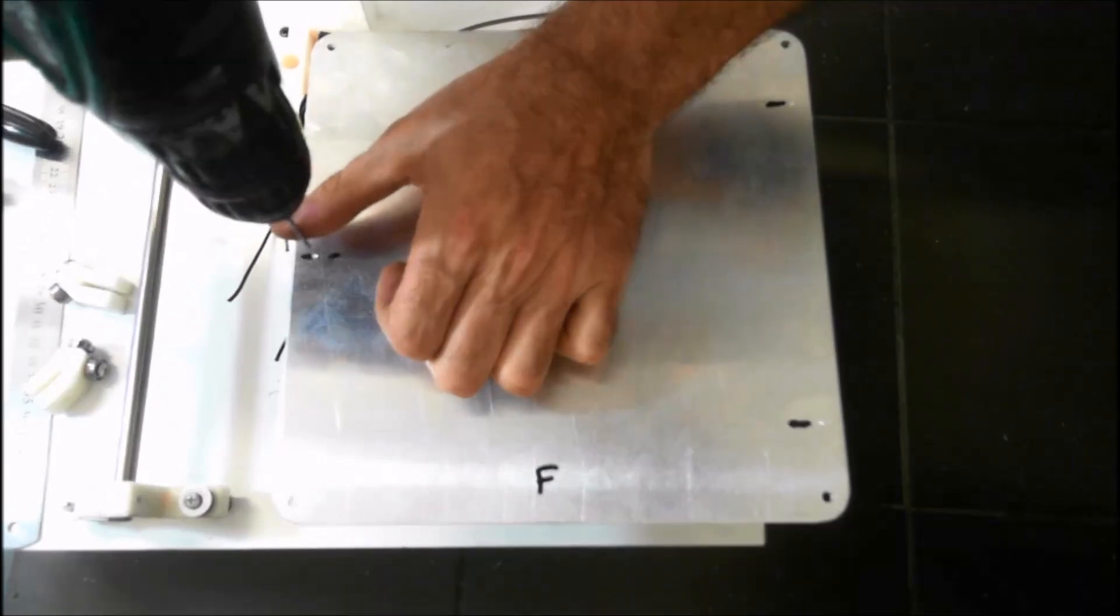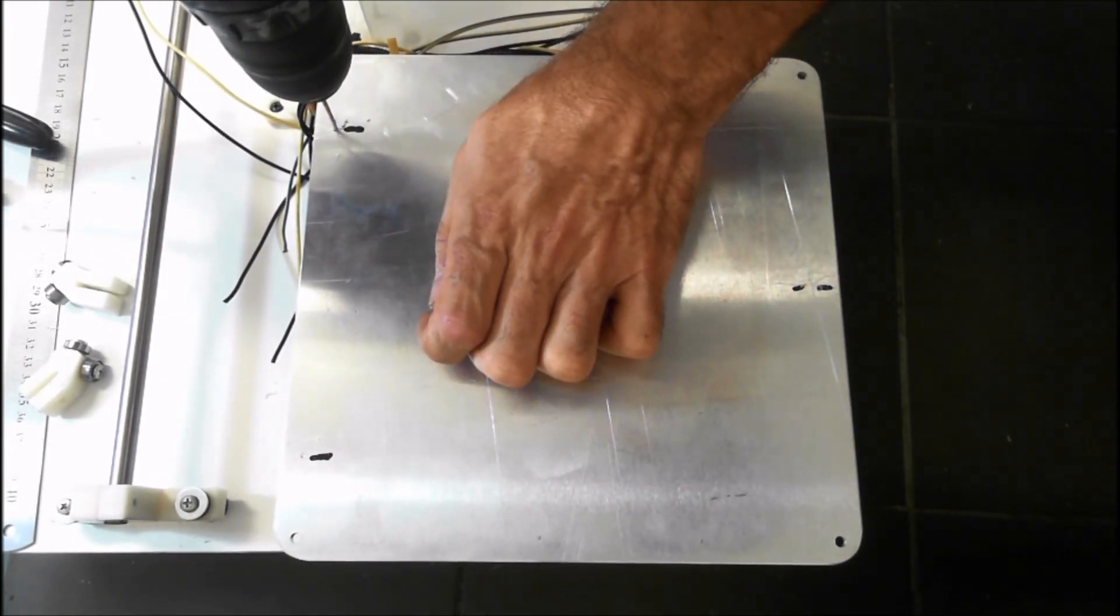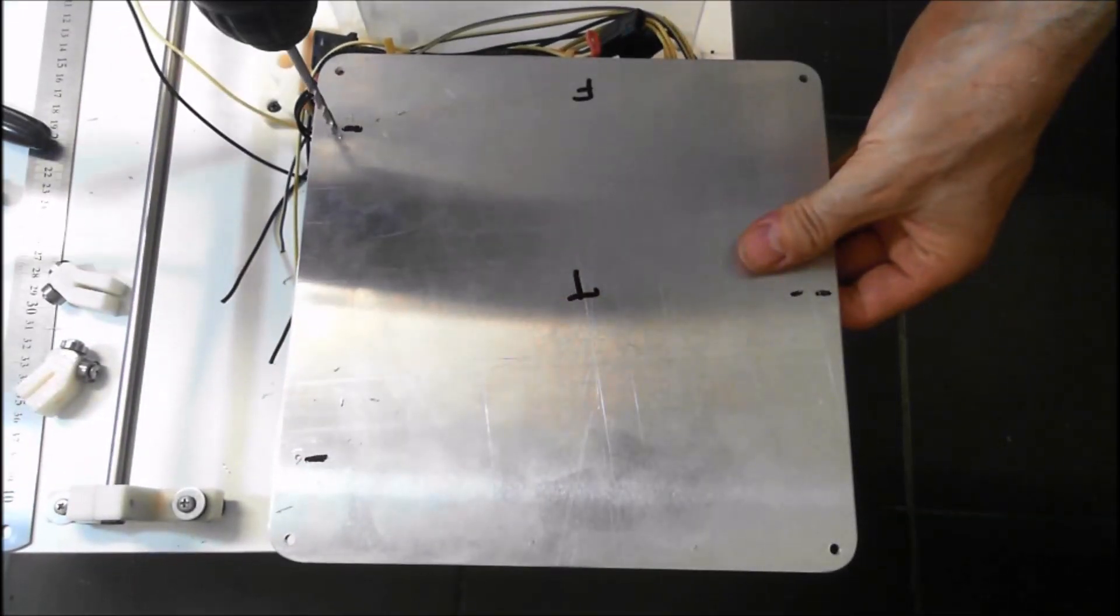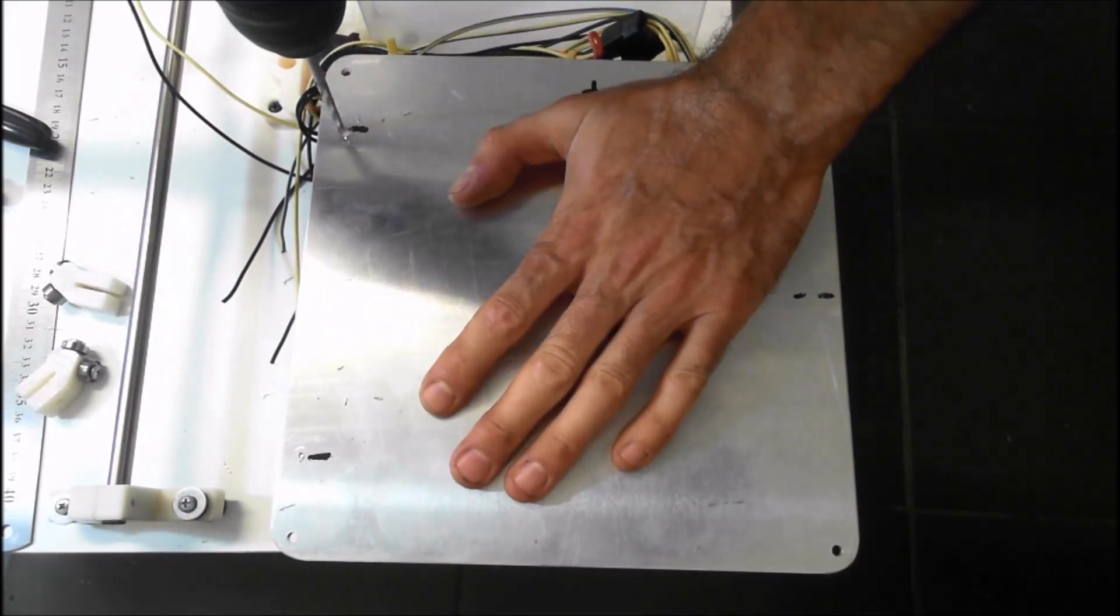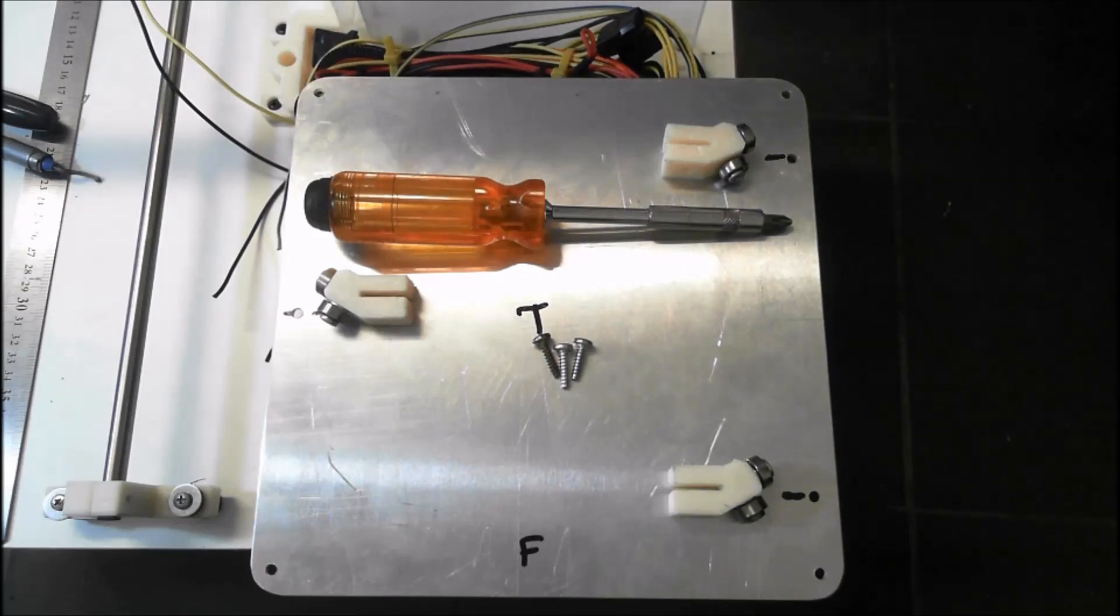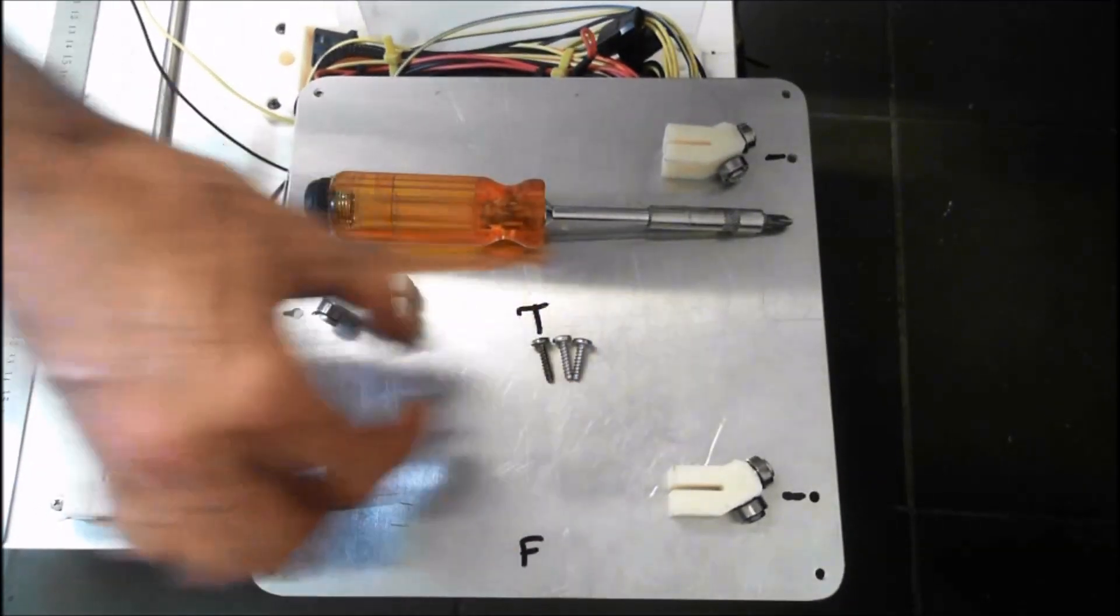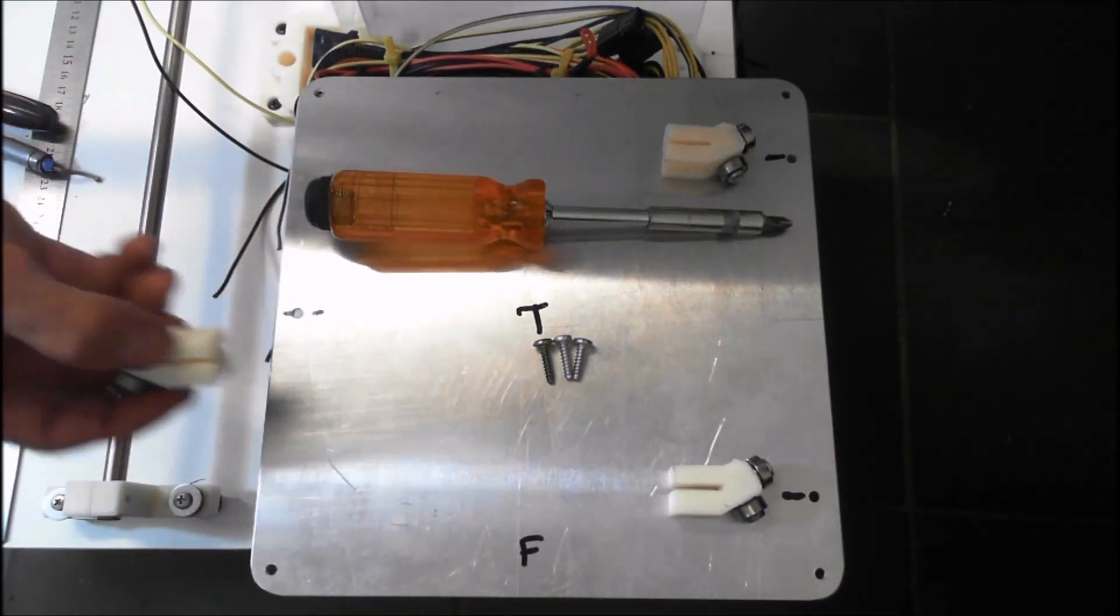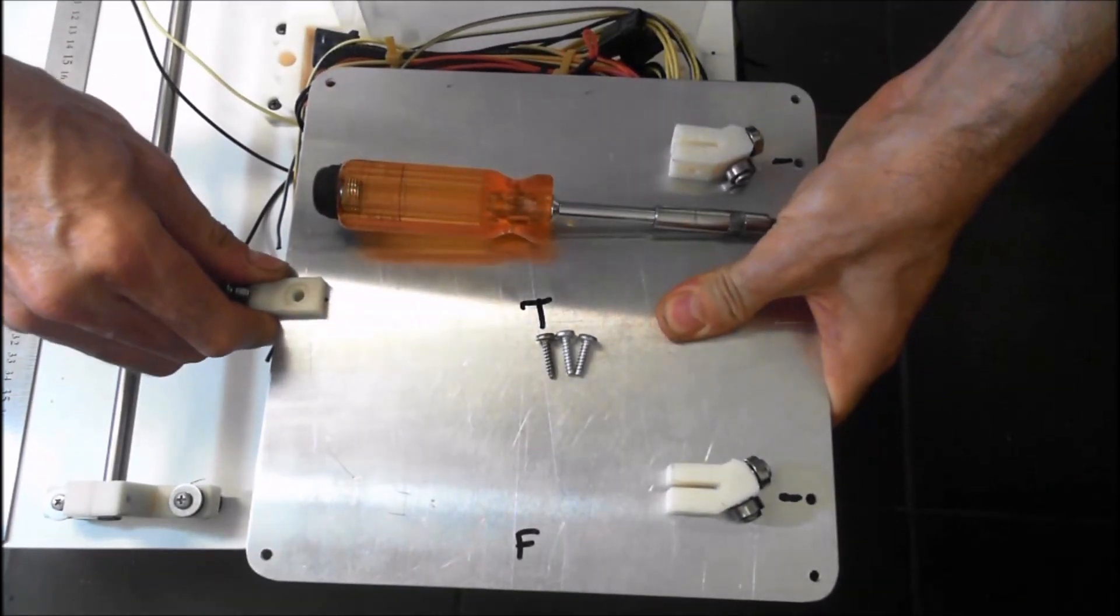Let's drill those holes out. We're going to drill them out to 4.2, which gives a bit of clearance. We're using M4 self-tappers. Now it's time to install our bearing mounts with three self-tapping screws, probably about 20 to 25 millimeters long. We've deburred the holes, so let's line up the bearing mounts over the holes.